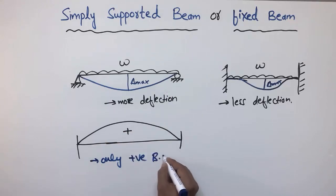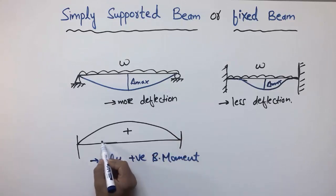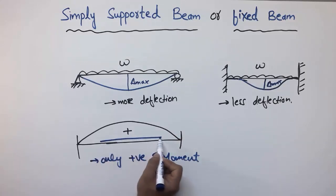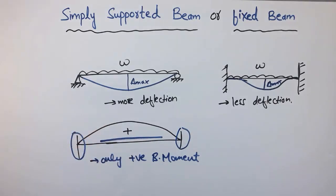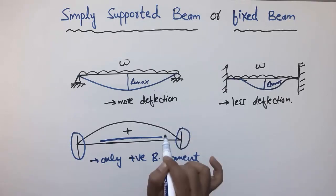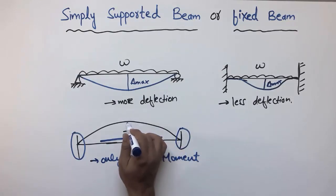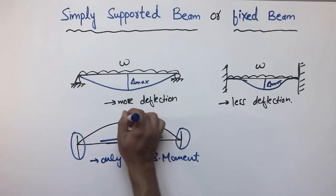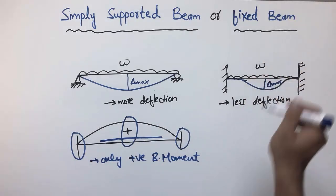We don't have any negative bending moment in the simply supported beam, so we only need to provide reinforcement at the midpoint of the beam — these are the tension bars at the midpoint. We don't have to provide reinforcement at the two ends because there is no negative bending moment there. This is one advantage, though the bending moment is maximum at the midpoint, requiring more reinforcement there.